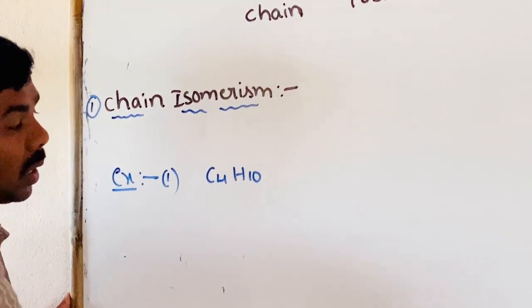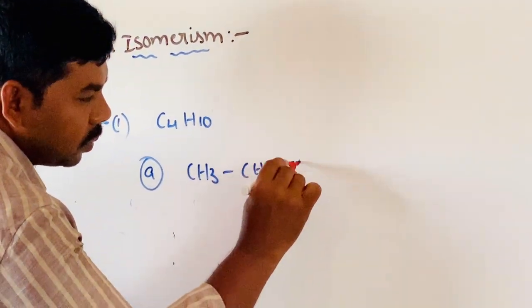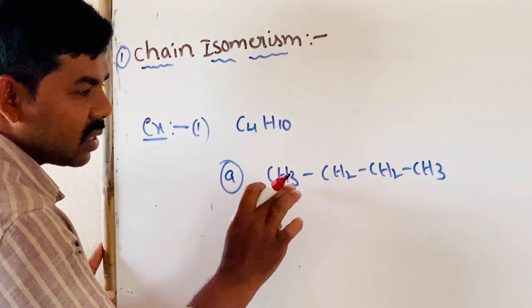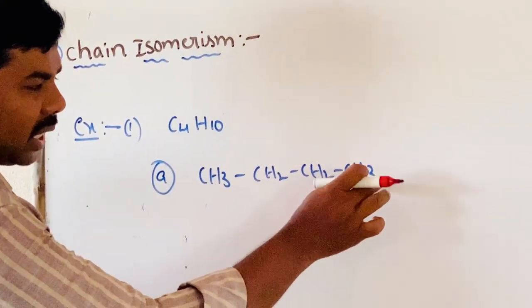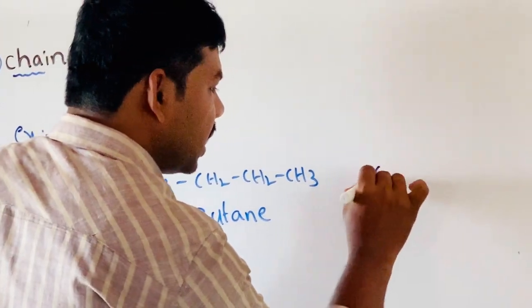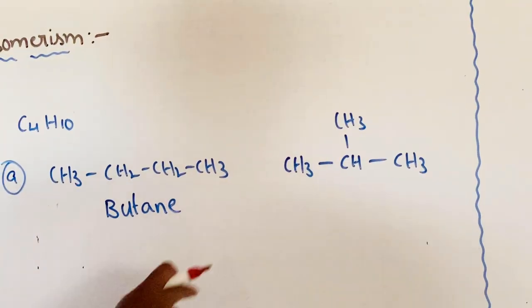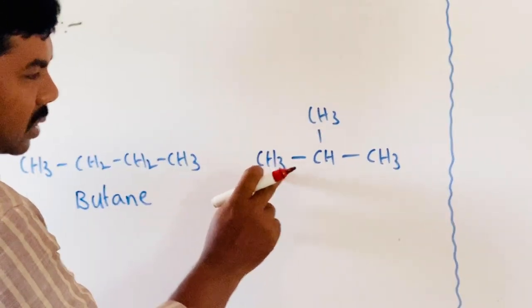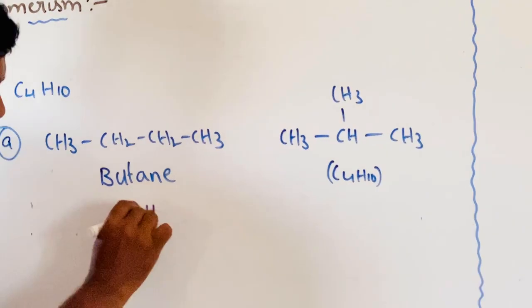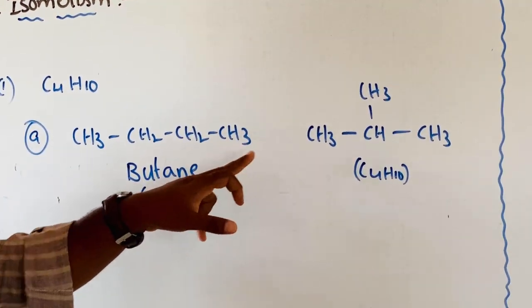Example: C4H10 is the molecular formula, name is butane. First structure: CH3-CH2-CH2-CH3, which gives 4 carbons and 10 hydrogens — C4H10. Second structure: CH3-CH(CH3)-CH3, which also gives C4H10. Molecular formula is the same for both compounds, but they have different carbon chains — this illustrates chain isomerism.